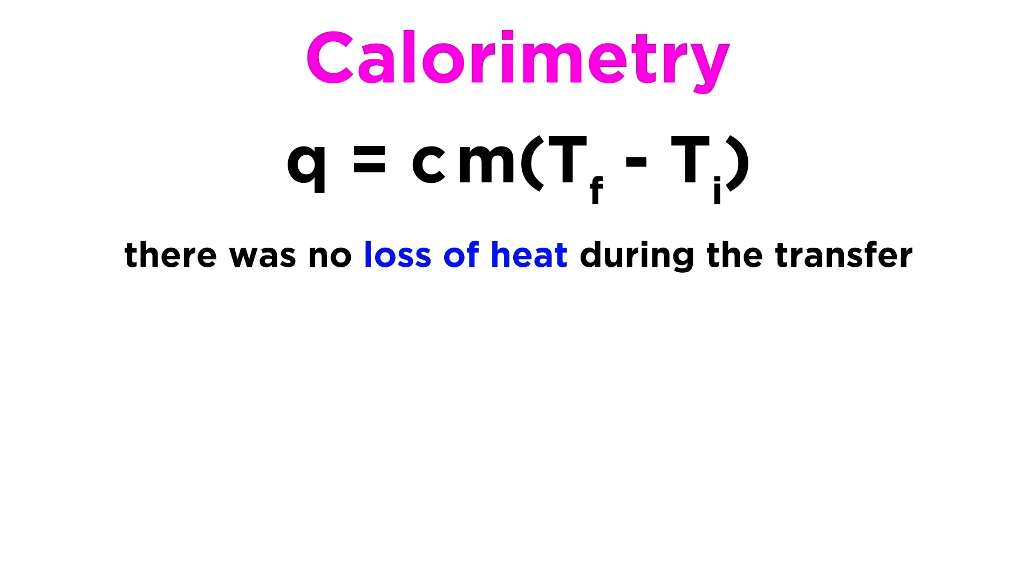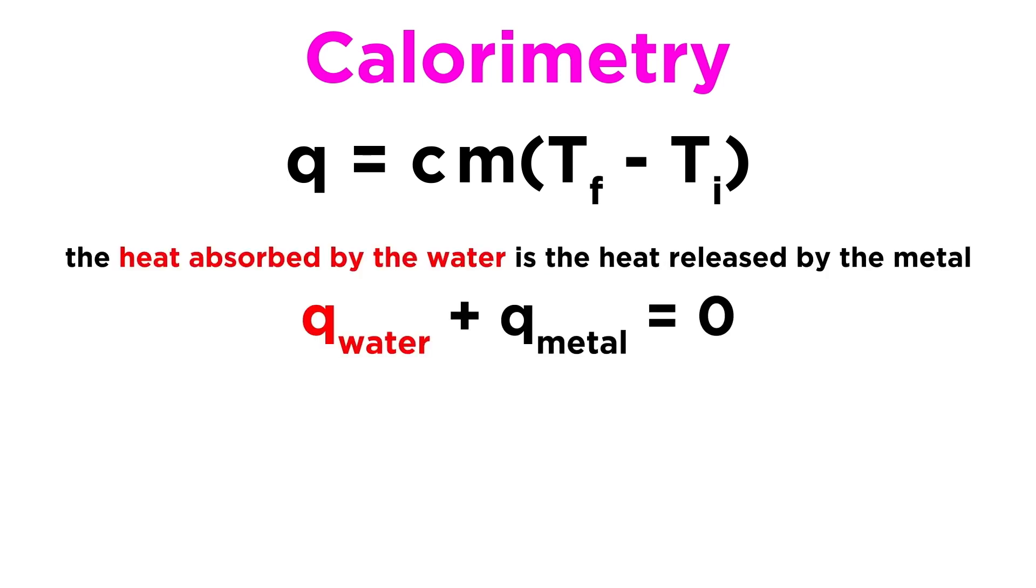We also know from conservation of energy that there can have been no loss of heat during this transfer. In other words, q water, the heat absorbed by the water, plus q metal, the heat released by the metal, equals zero. If we subtract q metal from both sides, we get q water equals negative q metal, which represents the reasonable assumption that all of the heat involved in the process went directly from the metal to the water, losing only a negligible amount to the environment. Therefore, in calculating the heat absorbed by the water in the calorimeter, we will also learn the amount of heat that was released from the metal, which is simply the negative version of q for the water.